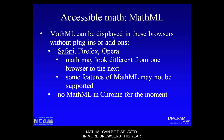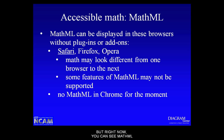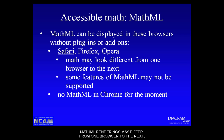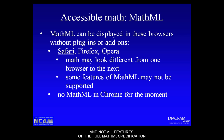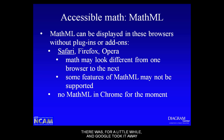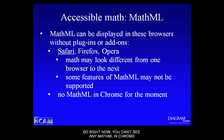MathML can be displayed in more browsers this year than a couple of years ago. You can see MathML without any special plug-ins in Safari, Firefox on Mac and Windows, and Opera. MathML renderings may differ from one browser to the next — an equation may look a little different in Safari than in Firefox or Opera — and not all features of the full MathML specification may be supported in all browsers. Currently there is no visual display of MathML in Chrome; Google removed it due to bugs they needed to work out.